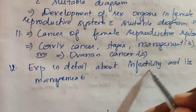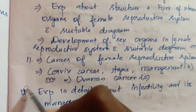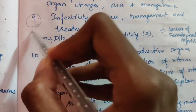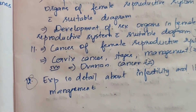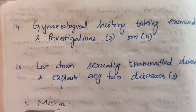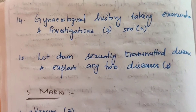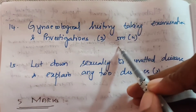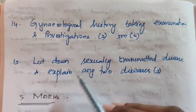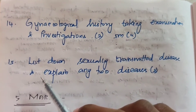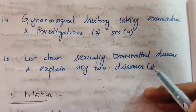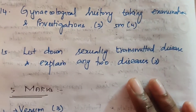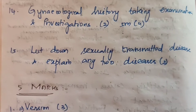Twelfth one: explain in detail about infertility and its management. Fourteenth one: gynecological history taking, examination and investigation — two times for 15 marks, four times for 5 marks. Fifteenth one: list down sexually transmitted diseases and explain any two diseases — two times.